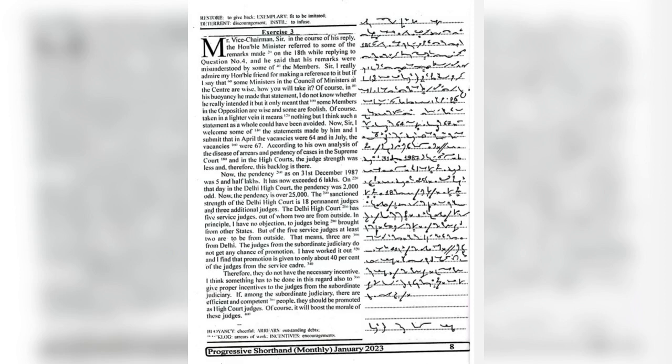Now, Sir, I welcome some of the statements made by him and I submit that in April the vacancies were 64 and in July the vacancies were 67. According to his own analysis of the disease of areas and pendency of cases in the Supreme Court and in the High Courts, the judge strength was less and therefore this backlog is there. Now, the pendency as on 31st December 1987 was 5.5 lakhs. It has now exceeded 6 lakhs.